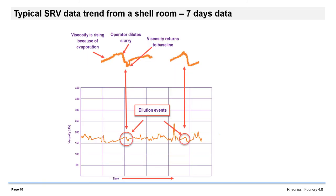Here is the same plot showing details of two slurry dilution events. The slow rise of viscosity indicates loss of water by evaporation. The operator manually dosed water to restore the viscosity to his desired value, about 170 centipoise.